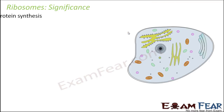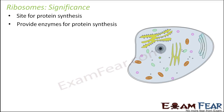Ribosomes are the site for protein synthesis. The proteins synthesized on the free ribosomes get distributed randomly throughout the cytoplasm. Proteins synthesized on the rough endoplasmic reticulum go to the Golgi apparatus where they get packaged and then transported by transport vesicles. Ribosomes also provide enzymes for protein synthesis - this is the main function of ribosomes.